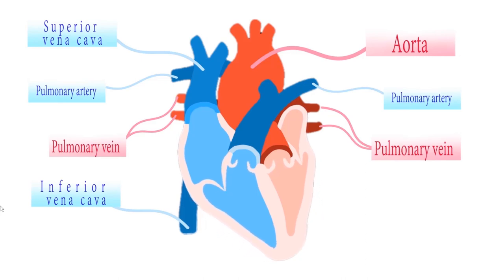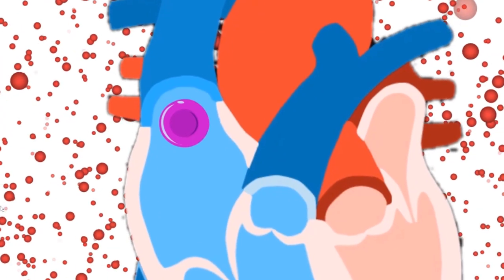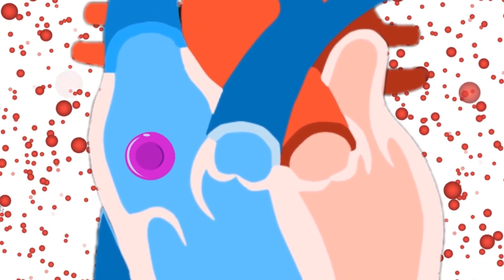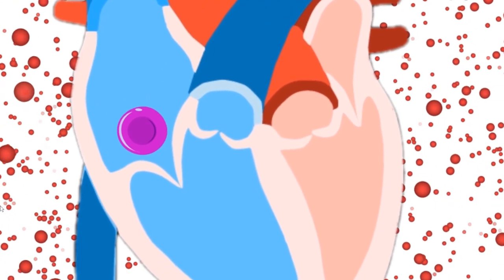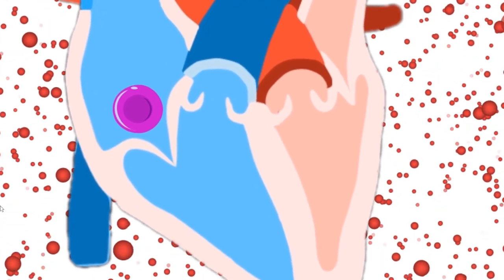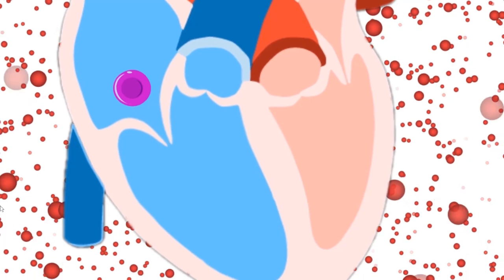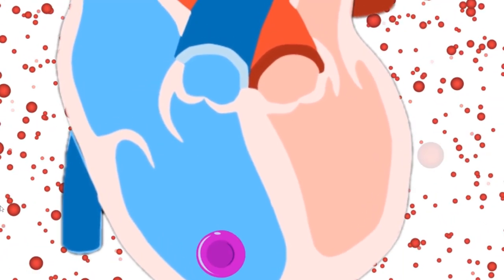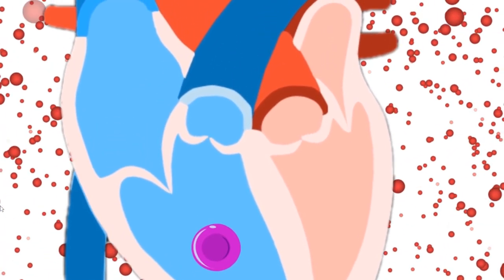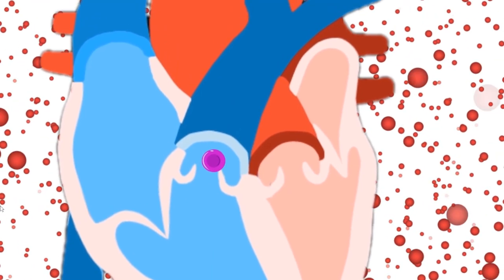Going back, oxygen-poor blood from superior and inferior vena cava will be received by the right atrium. Tricuspid valve will open to reach the right ventricle. Right ventricle will pump this blood to the pulmonary artery going to the lungs.